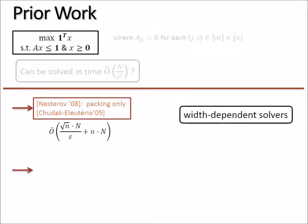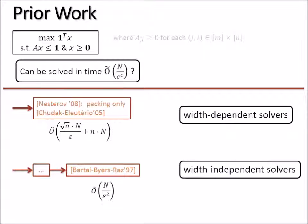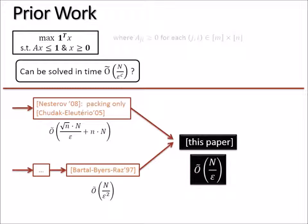This is in contrast to another line of research starting from Luby and Nissan. A famous work is due to Bartal, Byers, and Raz, which obtained a nearly linear time algorithm to solve this with running time linearly depending on N but unfortunately 1/epsilon squared convergence. This line is known as width-independent solvers because there's no other factors in front of N. There are lots of follow-up works, but this 1/epsilon squared factor has never been improved since 1997. In short, we got an algorithm that finally converges these two lines of research. We get a running time that beats the best known width-dependent solvers, which has been the best for roughly 10 years, and we also beat the best width-independent solvers.